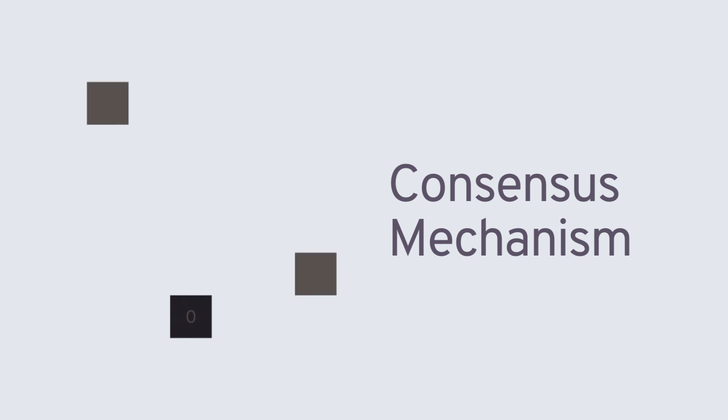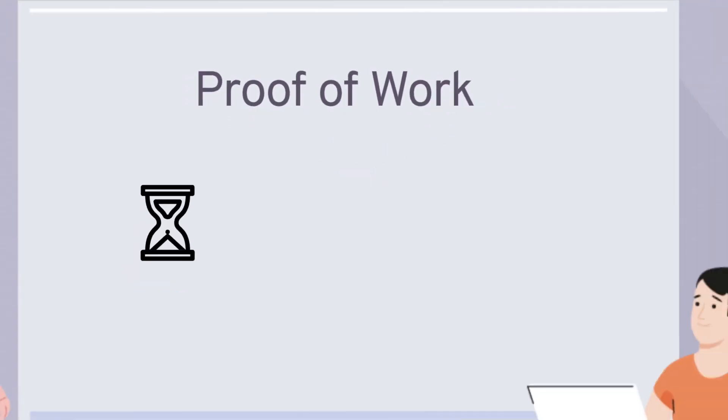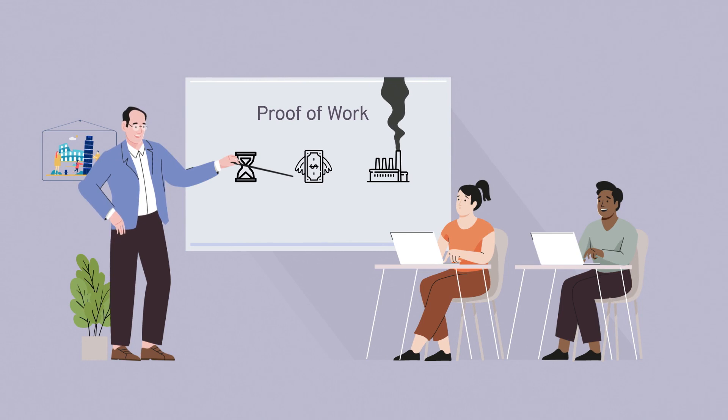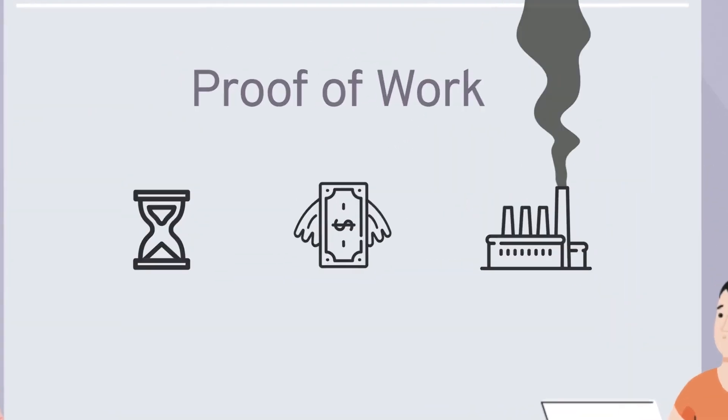Early blockchains used a consensus mechanism called proof-of-work. While this was useful at the time to prove out the concept of blockchain, it has been shown to be a very slow, expensive, and energy-inefficient way to write the next block in a chain.